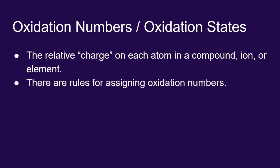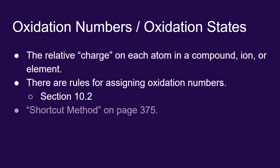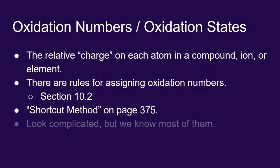There are a number of rules for assigning oxidation numbers. Section 10.2 in the book is all about assigning oxidation numbers. In this video, I want to focus on the shortcut method presented in the book, on page 375. It looks pretty complicated, but if you go through the rules, you'll realize that we actually know most of them.